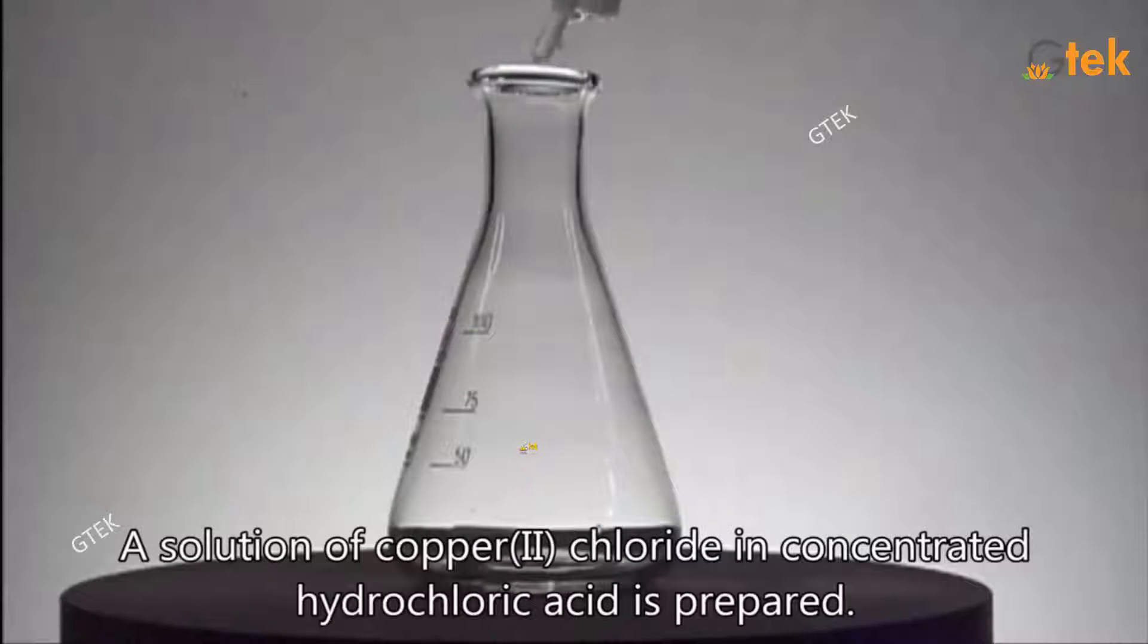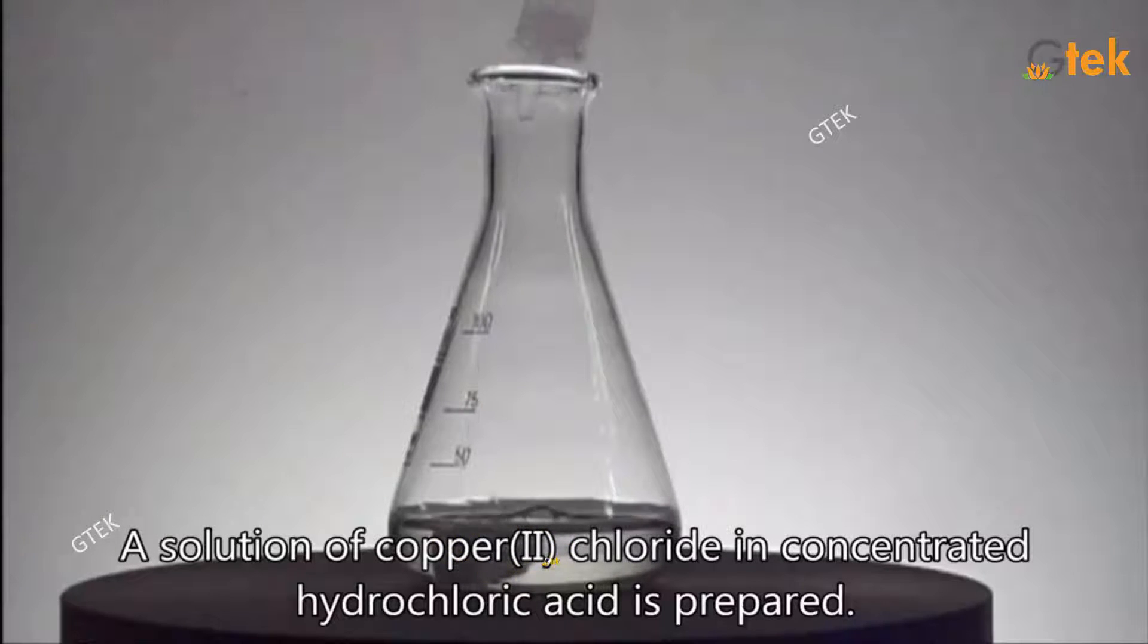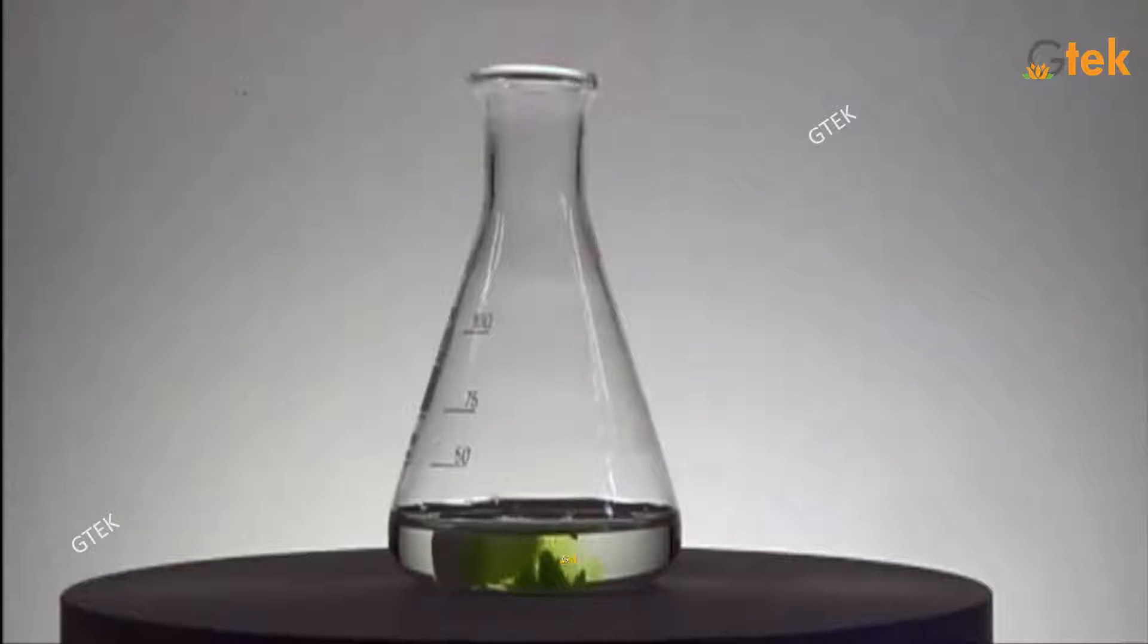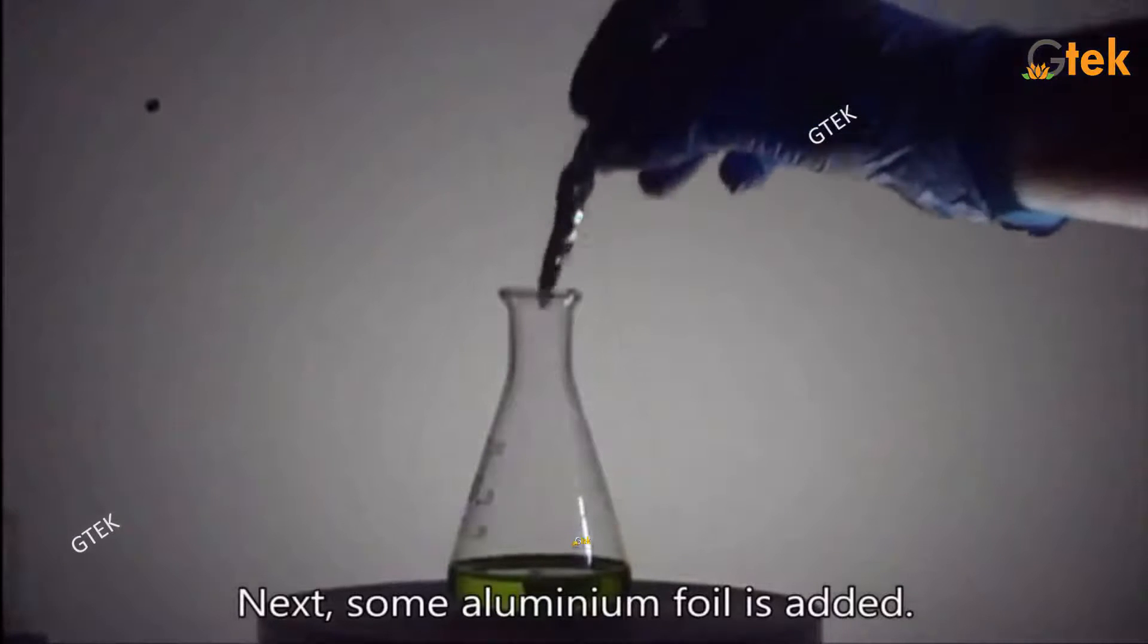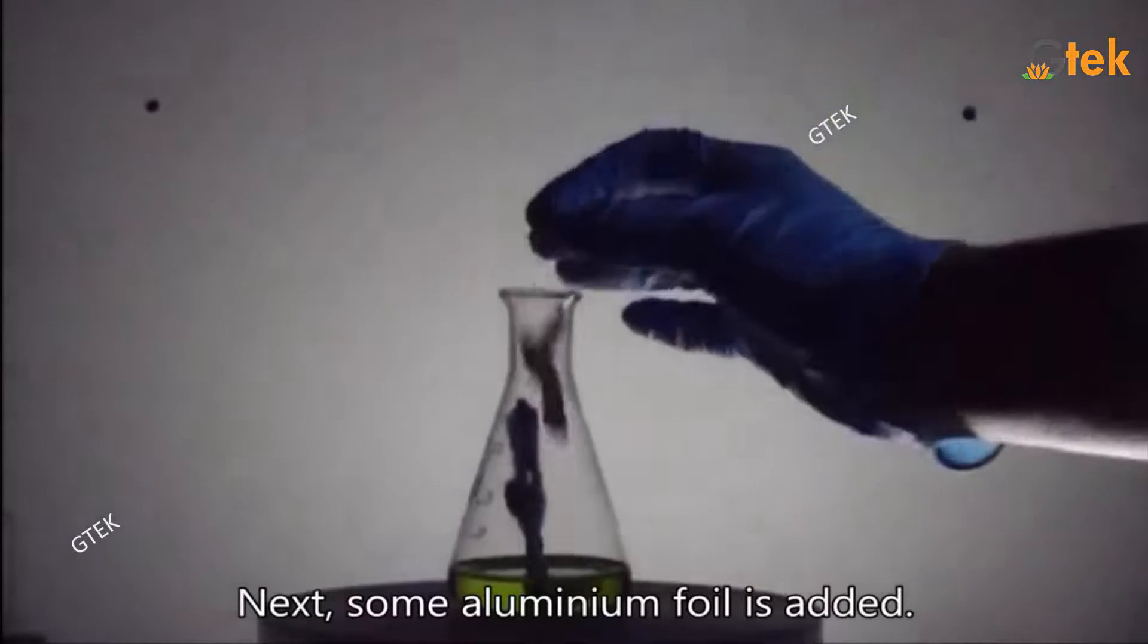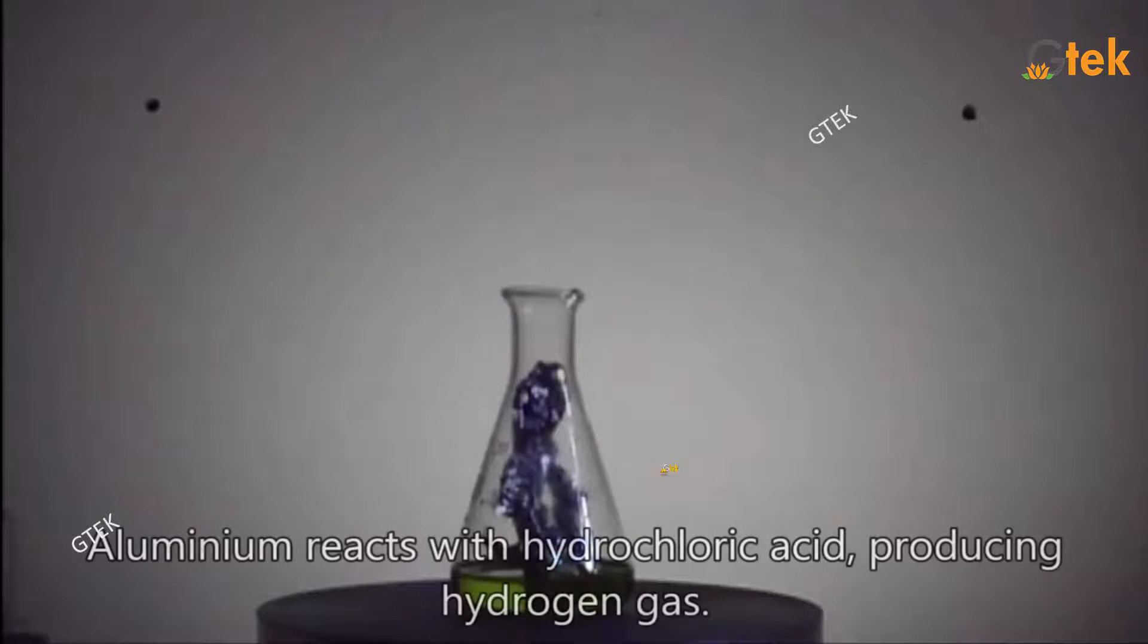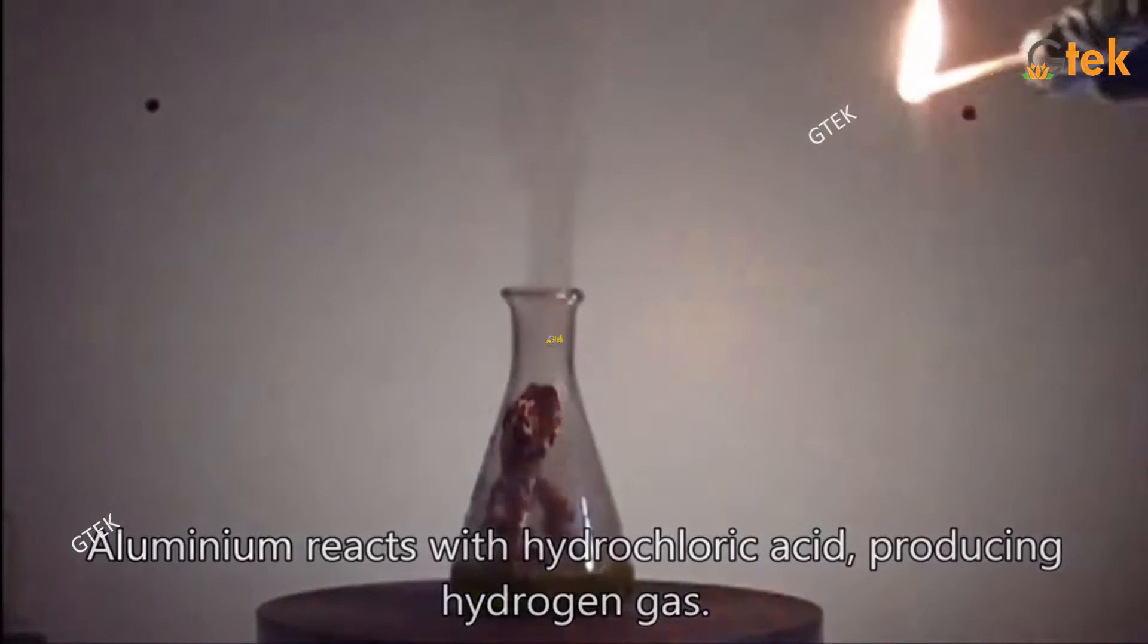I've got a small beaker with a solution of copper chloride in concentrated hydrochloric acid. You are able to see there is a small agitation happening inside the beaker, which enables the rotation. Now, I am trying to put some aluminum foil in it. Aluminum reacts with the hydrochloric acid and it produces hydrogen gas.